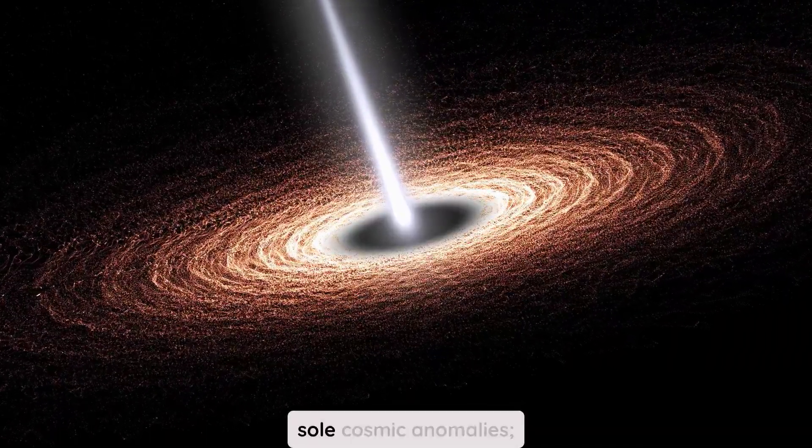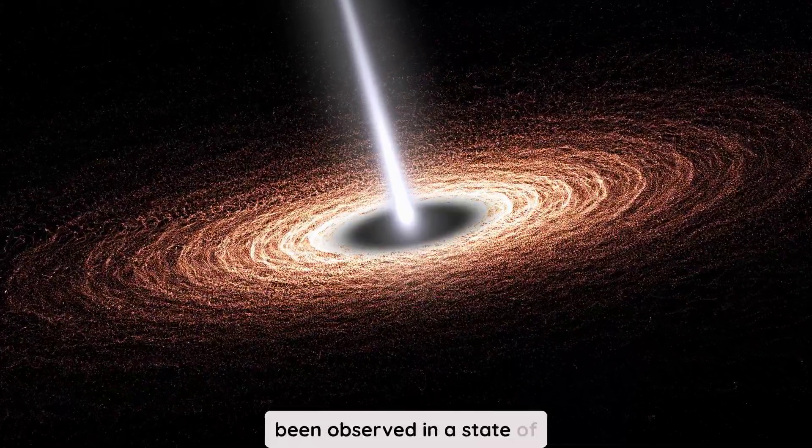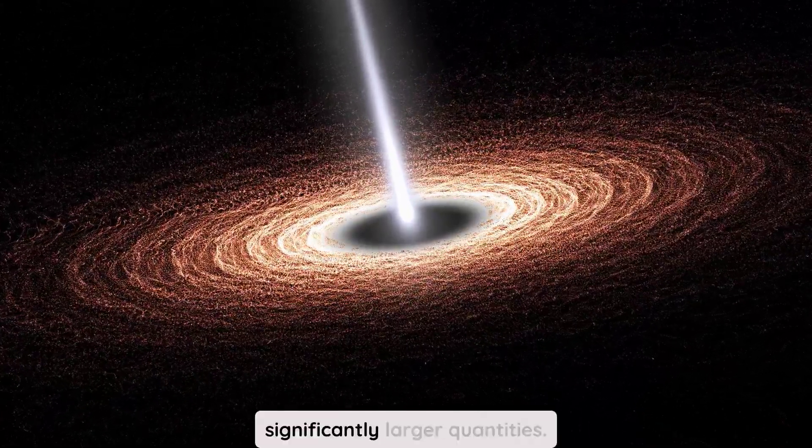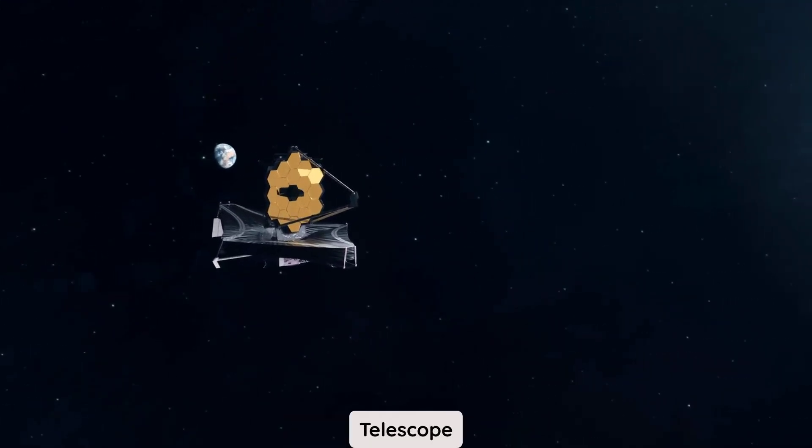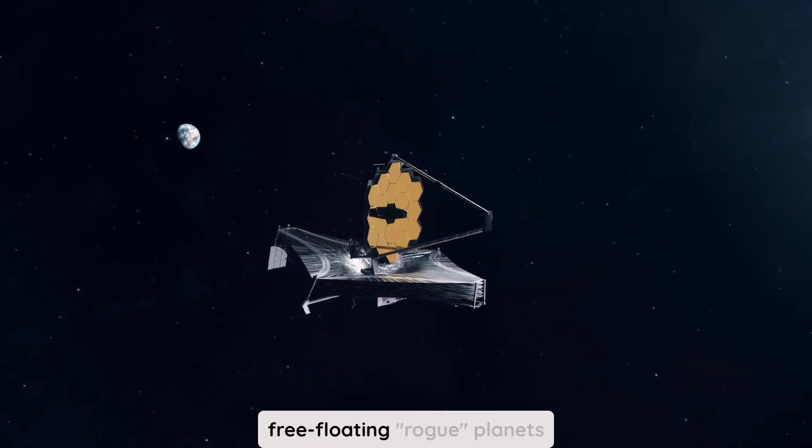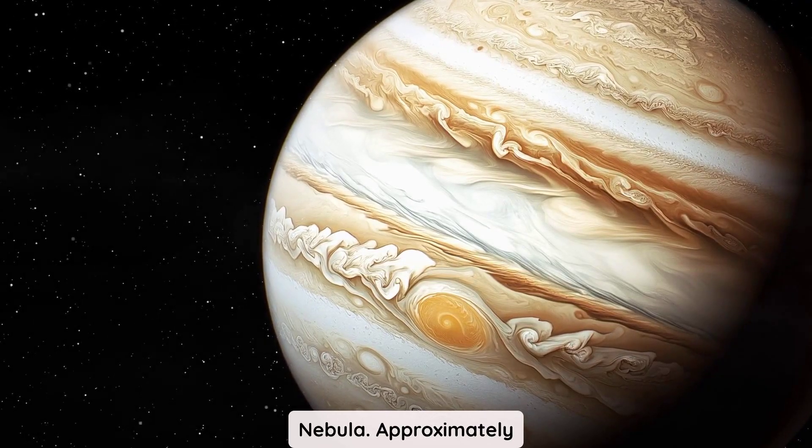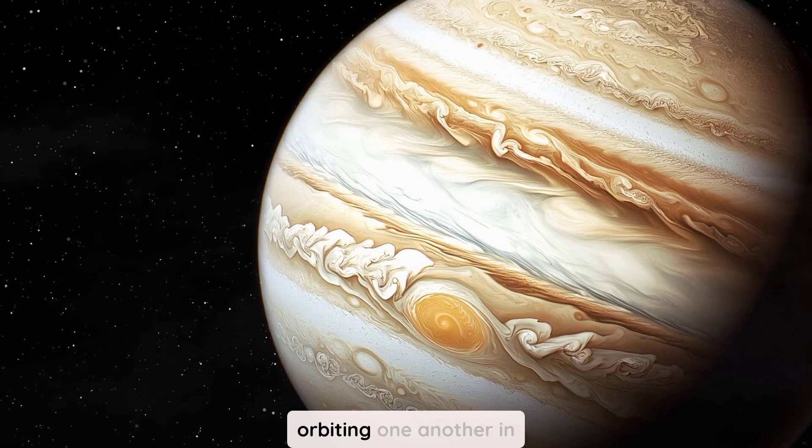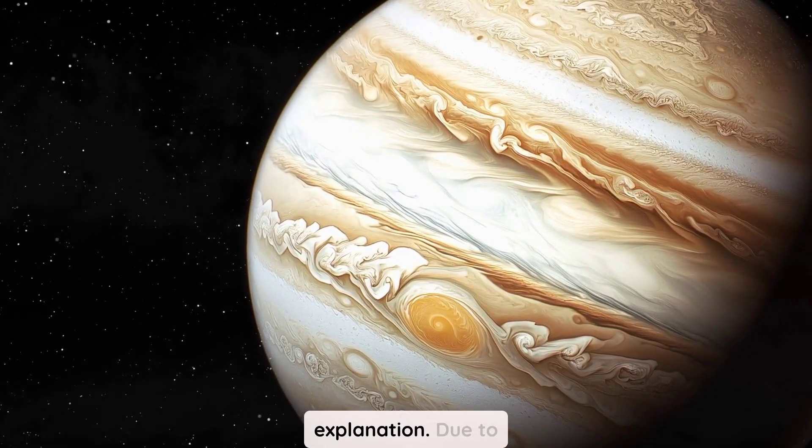Black holes are not the sole cosmic anomalies. Planets have also been observed in a state of escape and in significantly larger quantities. In 2023, the James Webb Space Telescope identified over 500 free-floating rogue planets traversing the Orion Nebula. Approximately 80 of these were found to be orbiting one another in binary pairs, a phenomenon that lacks a definitive explanation.